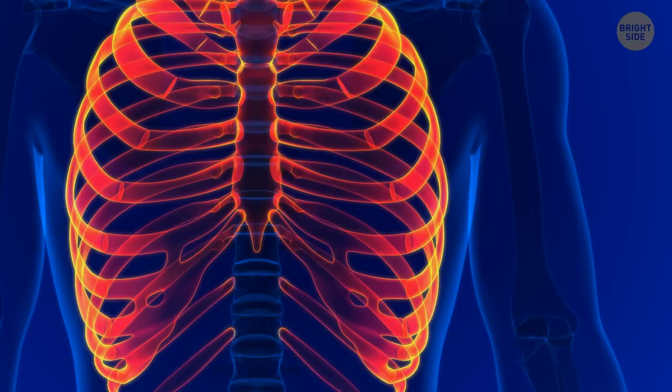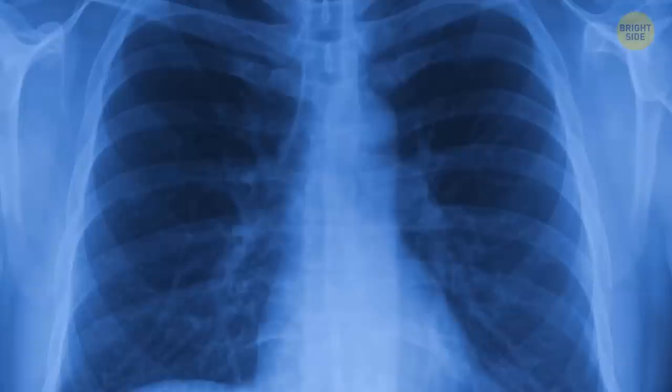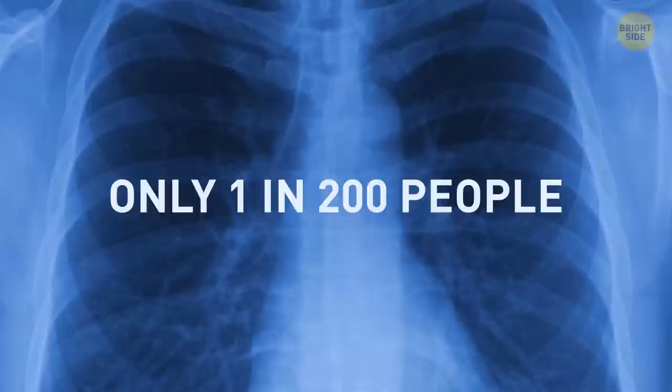You may have this rare body feature already and not know about it since sometimes even an x-ray can't spot it. Most of us have 12 pairs of rib bones, which means we were born with 24 ribs. There are some folks though that actually have 25 ribs. Only 1 in 200 people have this rare extra feature, and it's called a cervical rib.